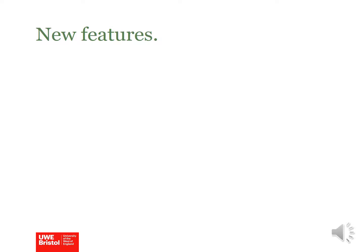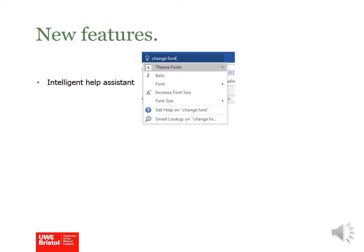Office 2016 now has some new enhancements designed to make working easier. The Intelligent Help Assistant, or Tell Me What You Need, helps you to find features and functions, or simply use it to access the Get Help function to understand what you need.